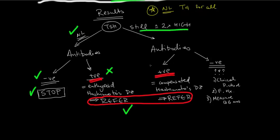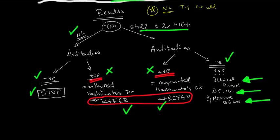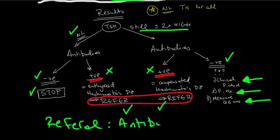If your TSH is still high and antibodies are present, you definitely have to refer to the endocrine clinic to initiate treatment for Hashimoto's disease. However, if your TSH is still high and antibodies are negative, you might be dealing with antibody-negative Hashimoto's, so you have to see what the clinical picture and family history are. Depending on the degree of suspicion, these patients may need TFTs repeated every 6 months. The key to knowing who to refer immediately is whether the Hashimoto's antibodies are positive. Thank you for listening — make sure to check out the other endocrine videos online.